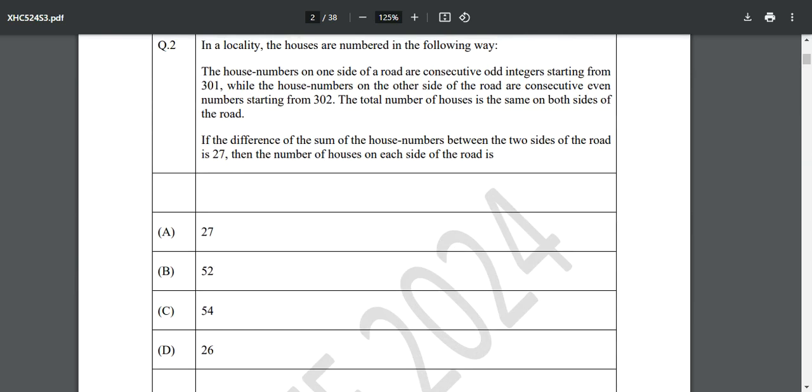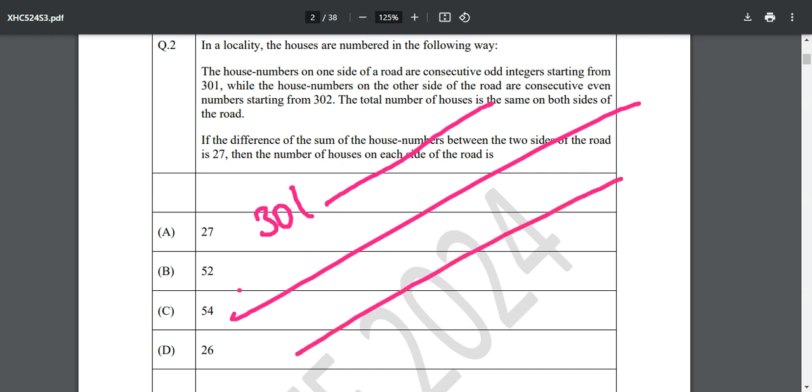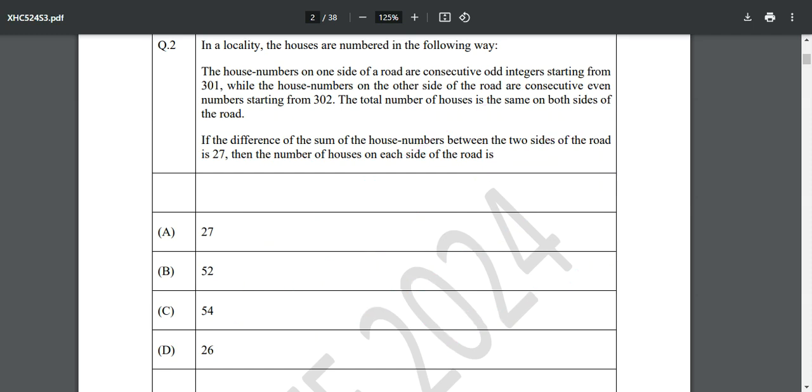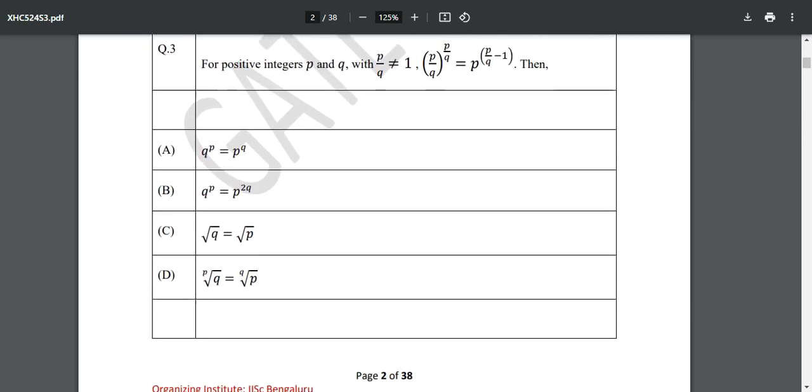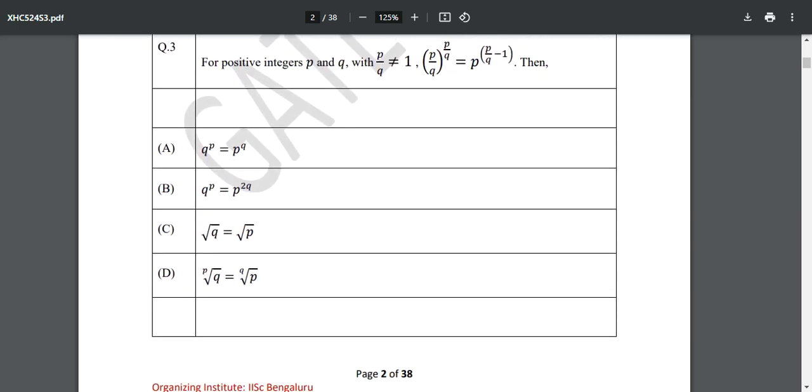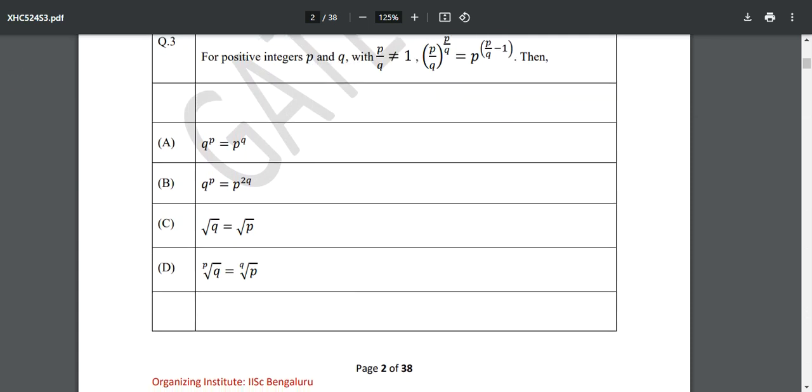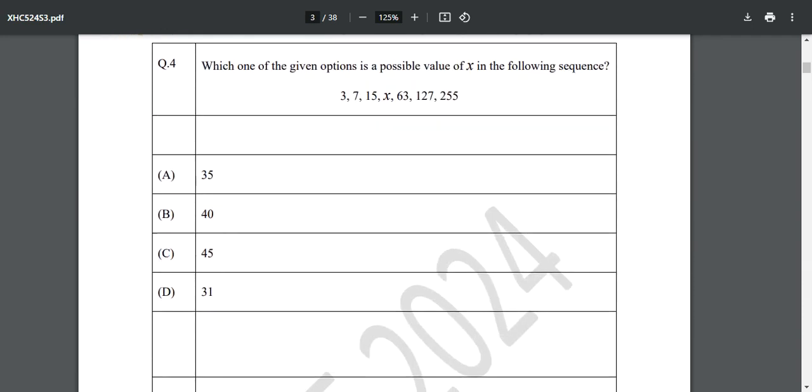Now this question: the house numbers on 301, 302 road are consecutive odd integers starting from 301. This is a math portion. Let's assume we are not happy with maths, so we will skip because this question will comprise of only one mark, so we can take a liberty on this. Then again mathematics - for positive integers p and q - if this is haunting you, you can leave it simply. But you need to apply common sense.